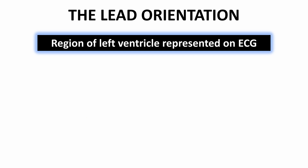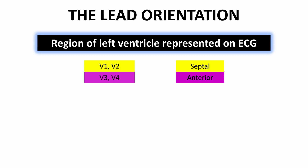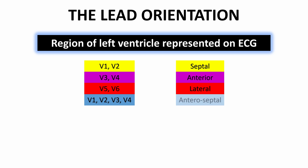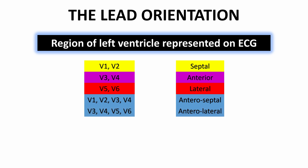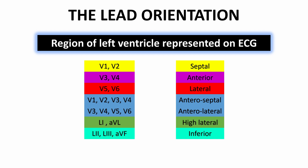The regions of the left ventricle represented on ECG are as follows: the septal wall represented by V1 and V2; the anterior wall by V3 and V4; the lateral wall by V5 and V6; the anteroseptal wall by V1, V2, V3, V4; the anterolateral wall by V3, V4, V5, V6; the high lateral wall by AVL and Lead 1; and the inferior wall by AVF and Leads 2 and 3.